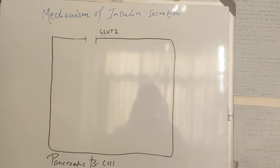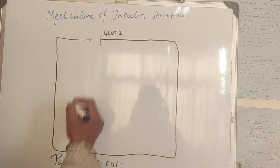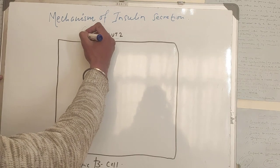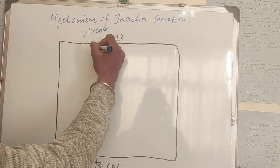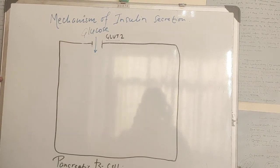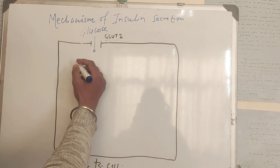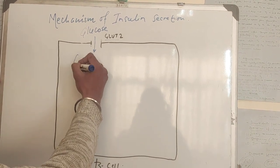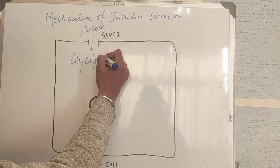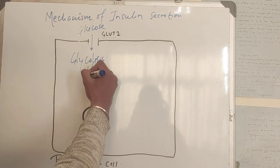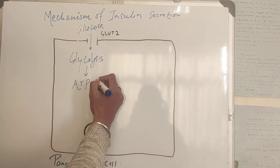After we take food, we have high blood glucose levels. Glucose from the blood enters the pancreatic beta cell, where it enters the glycolysis pathway and leads to the formation of ATP.